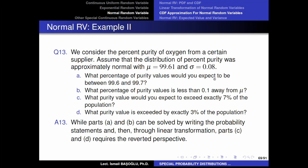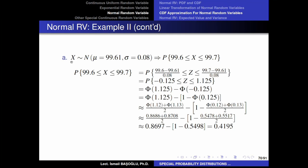The first question: what percentage of purity values would you expect to be between 99.6 and 99.7? For a randomly selected oxygen tube, the percentage of purity is normally distributed with location parameter 99.61 and scale parameter 0.08. We need to find the probability of X being between 99.6 and 99.7. Applying standardization, X becomes a standard normal random variable Z, and we calculate the probability of Z being between those two standardized values.